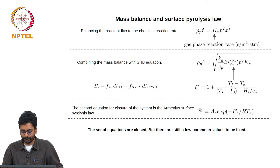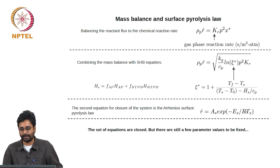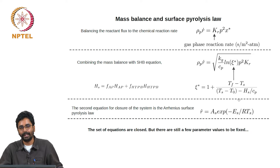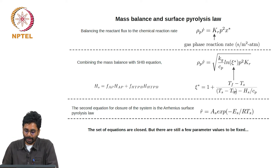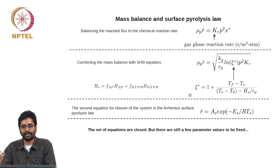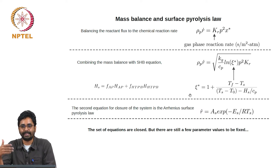The burn rate of AP is related to its surface temperature through an Arrhenius pyrolysis law, and the significance of the activation temperature is that it determines the burn rate once the surface temperature is known. This particular activation temperature range was arrived at by a series of calculations done by Professor P. A. Ramakrishna during his PhD, where every other parameter was fixed based on known ranges.